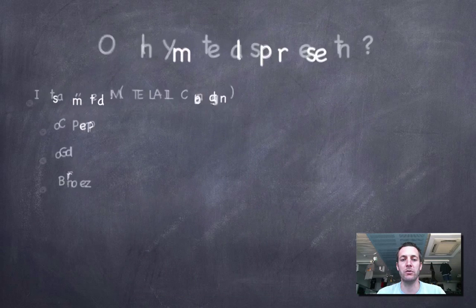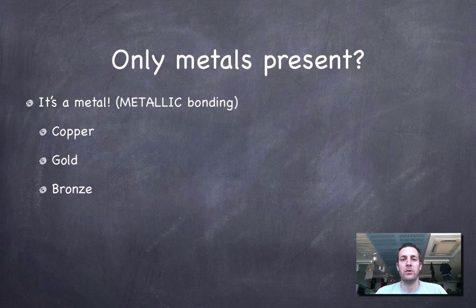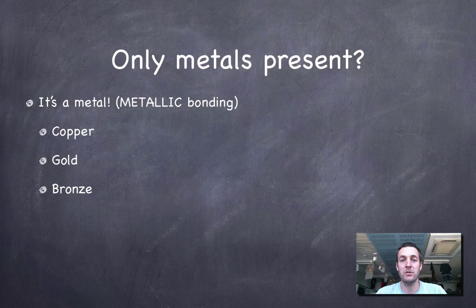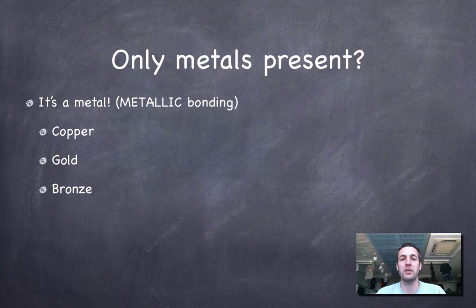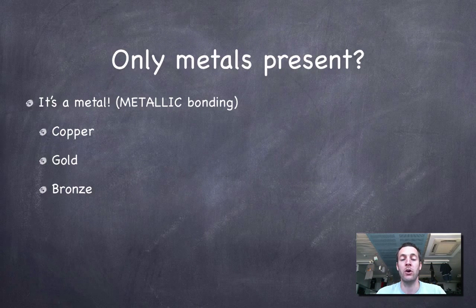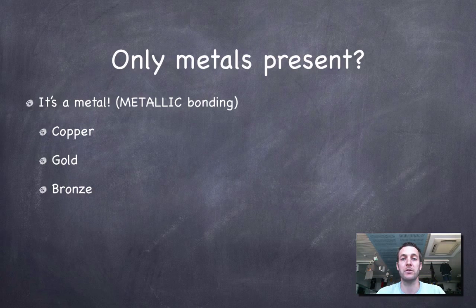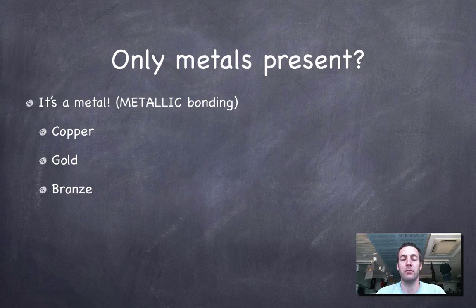Okay, so here come the rules. What do we decide if there are only metals present? Well it's going to be a metal. In other words, it's got metallic bonding. This could be a pure metal, so an element like copper or gold, or it could be a mixture of metals, so an alloy like bronze. It doesn't really matter—if you've only got metals present, then your bonding will be metallic.